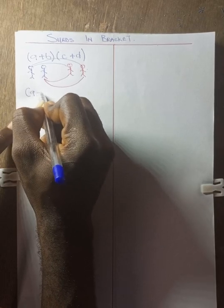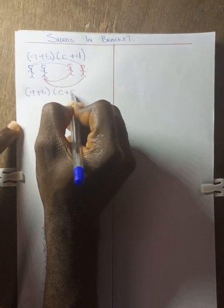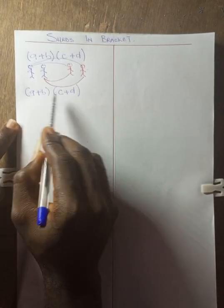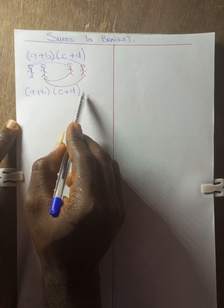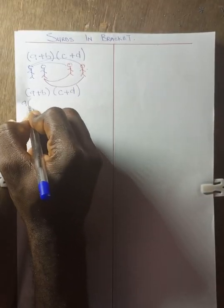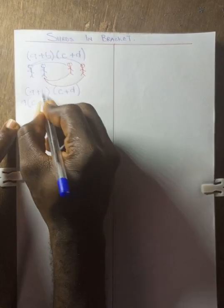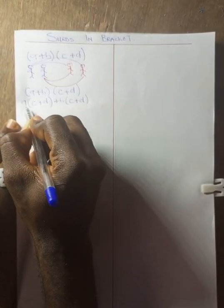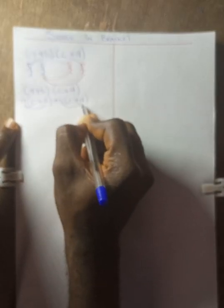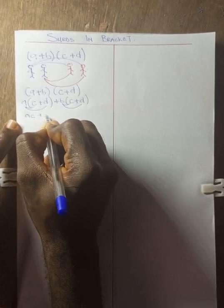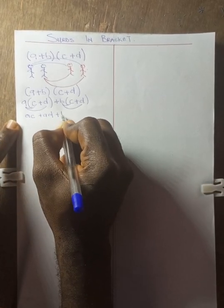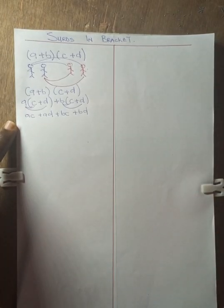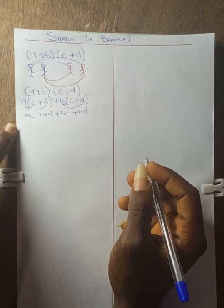We use this same concept for expansion. When you see (a + b)(c + d), it means these are two friends who see another two friends. So 'a' will greet these two, and 'b' will also greet these two. If 'a' greets these two, that means a(c + d); then b also greets c and d. So if you expand, you get ac + ad + bc + bd. If you don't understand this, check the last video where we already explained that.